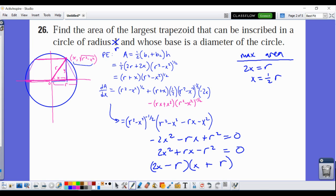And if we want the area of the largest trapezoid, then all we have to do is plug that into our area function right here to solve. And so we're going to get (r + 1/2 r) times (r² - 1/4 r²)^(1/2).